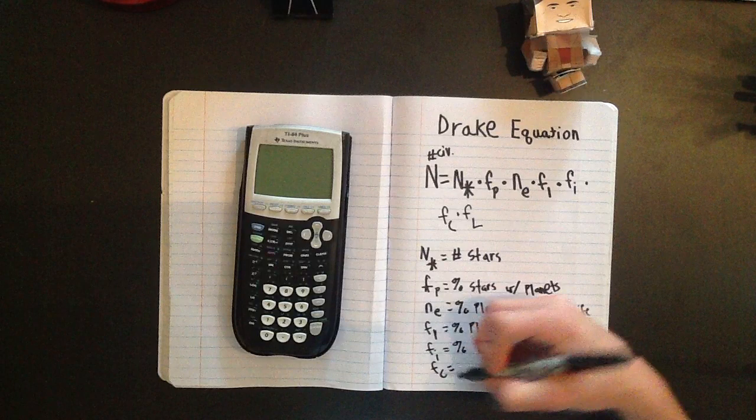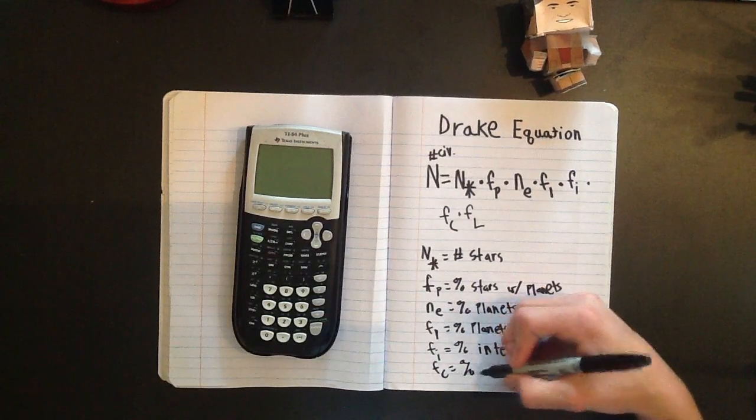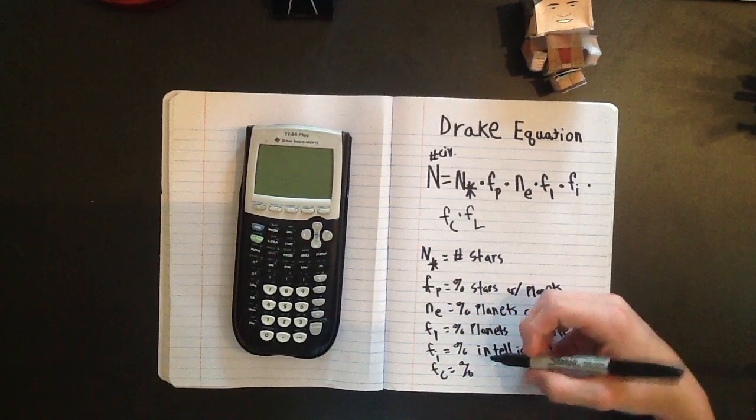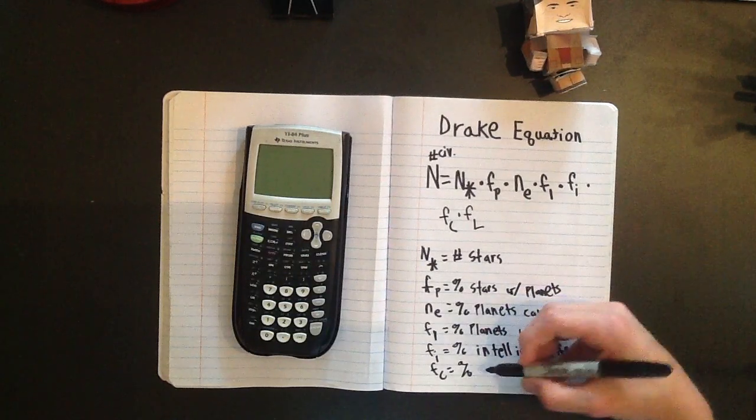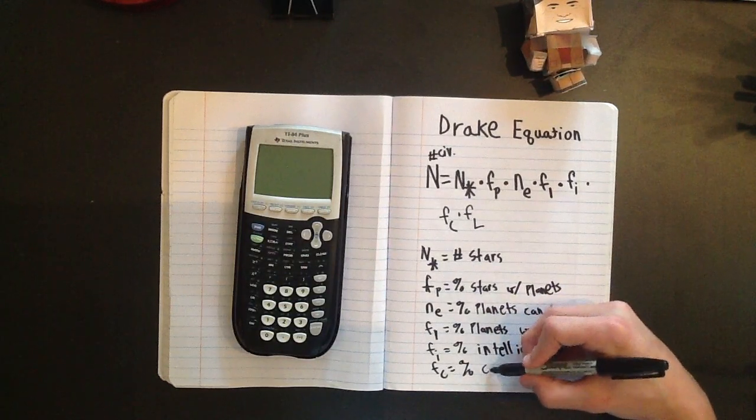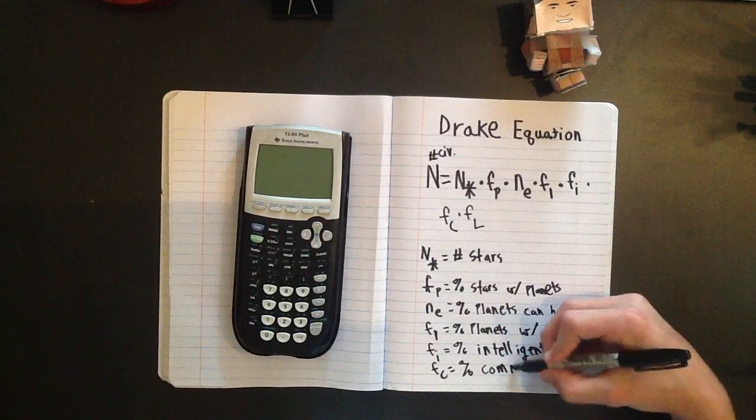F sub C is the percentage or the chance that those will have radio, they'll be able to communicate with us. So I'm just going to put percent communication or communicate.